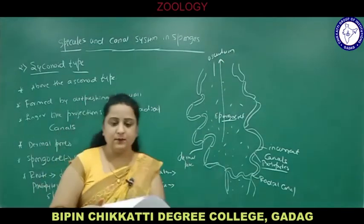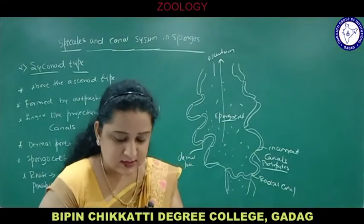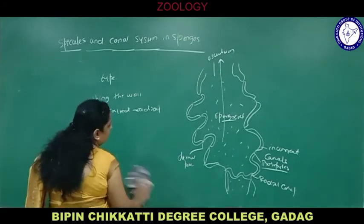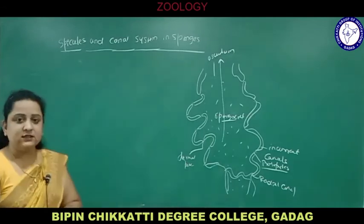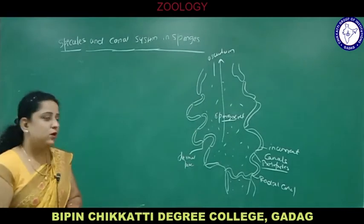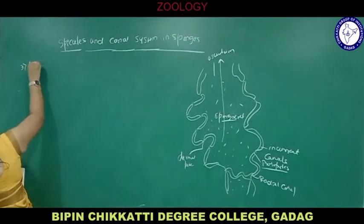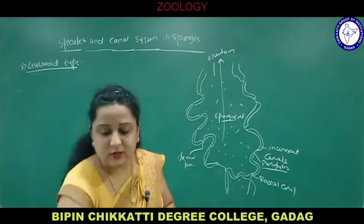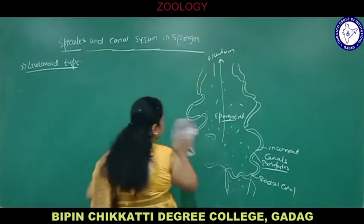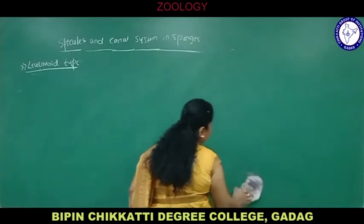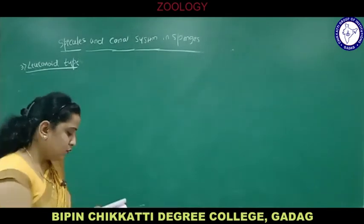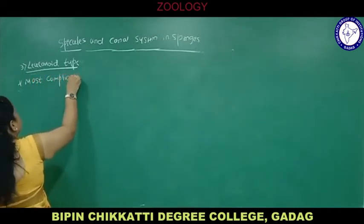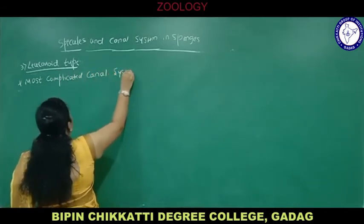The third type is leuconoid canal system. It is the most complicated type, developing from the syconoid type due to folding of radial canals. It has many more foldings and forms radial canals. It is found in leuconoid sponges.